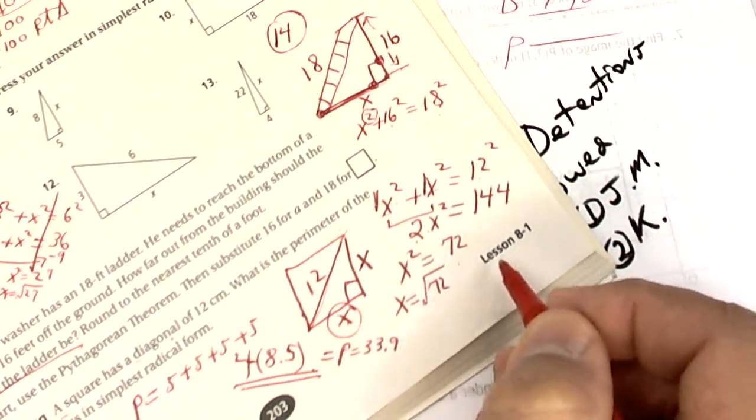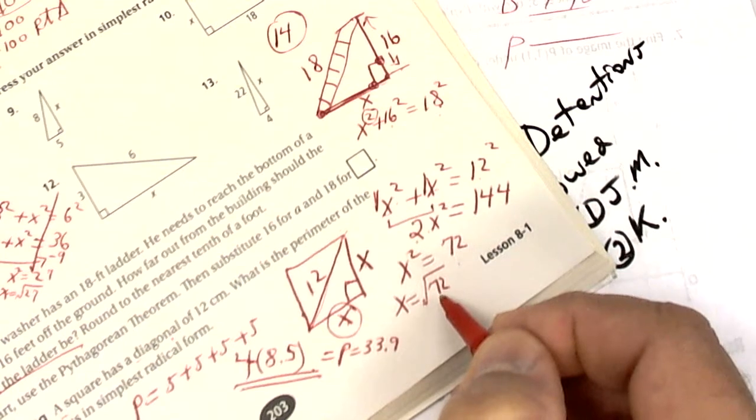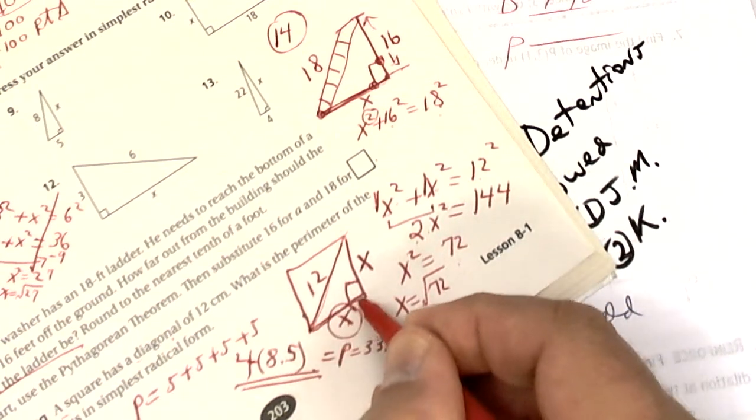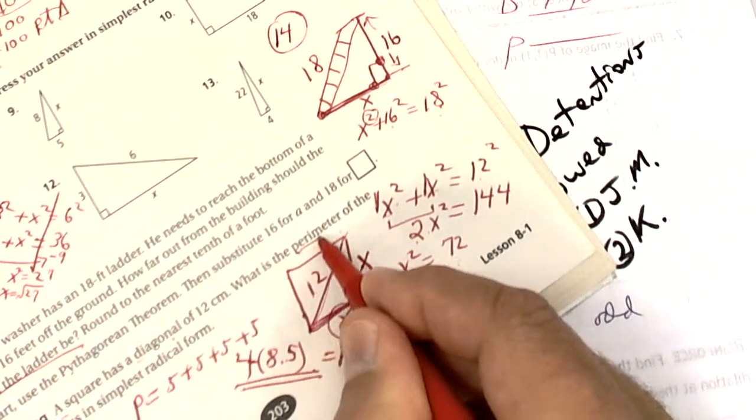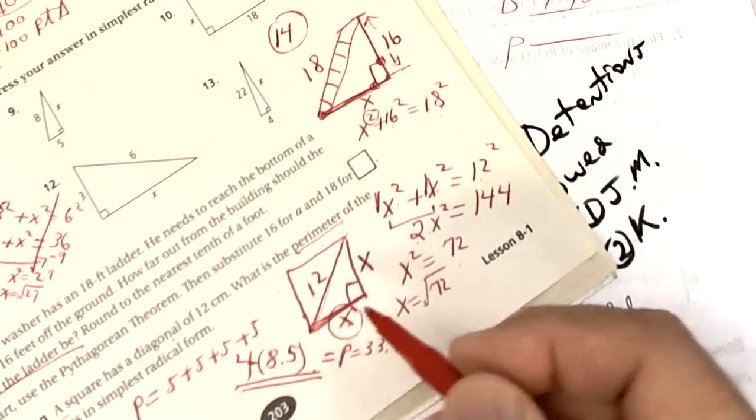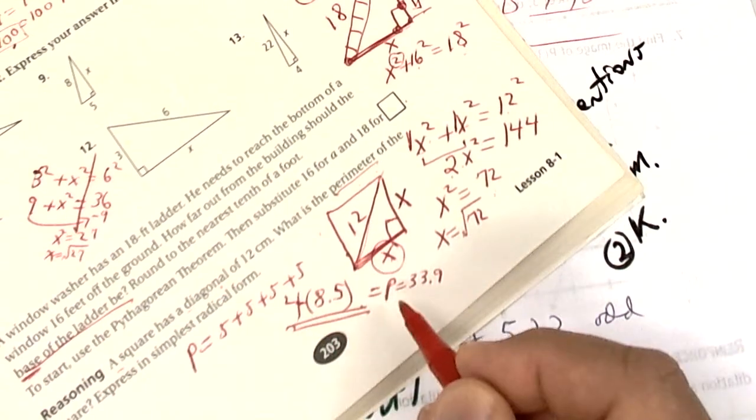So when you do the square root, leave it on your calculator. It's going to be a decimal. So that's this side, the square root of 72. But perimeter means all four sides. So multiply by four and you get your answer.